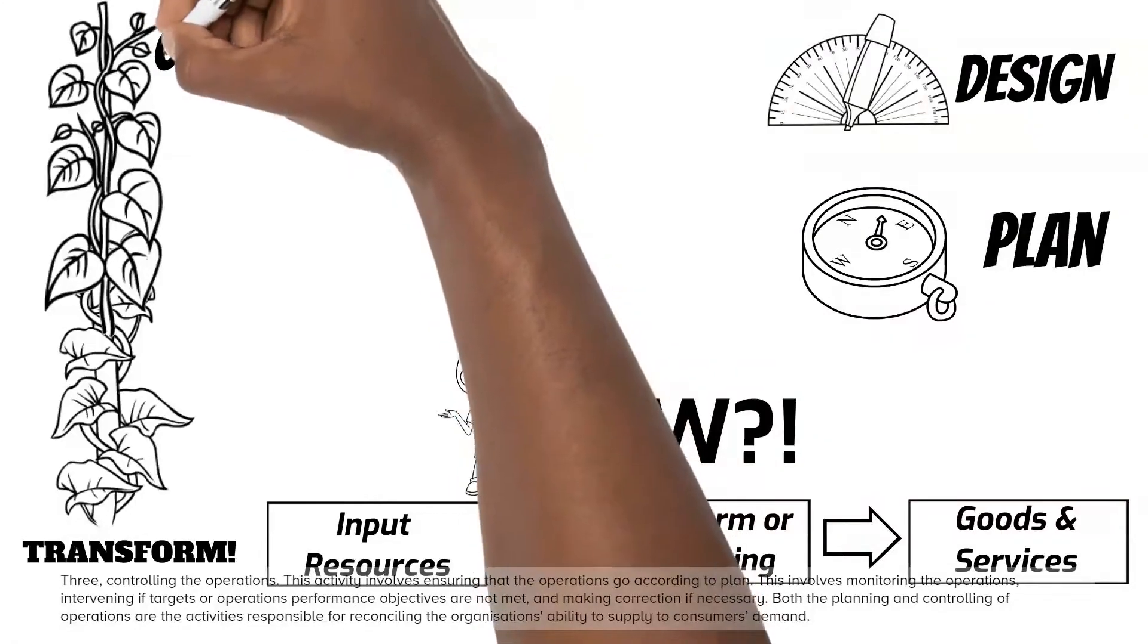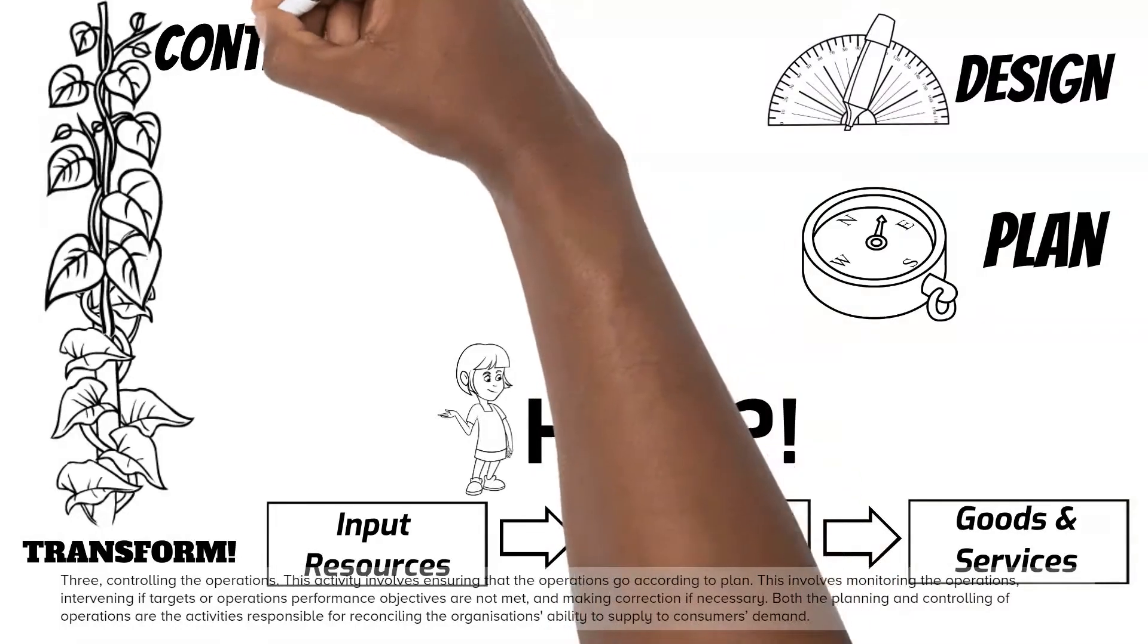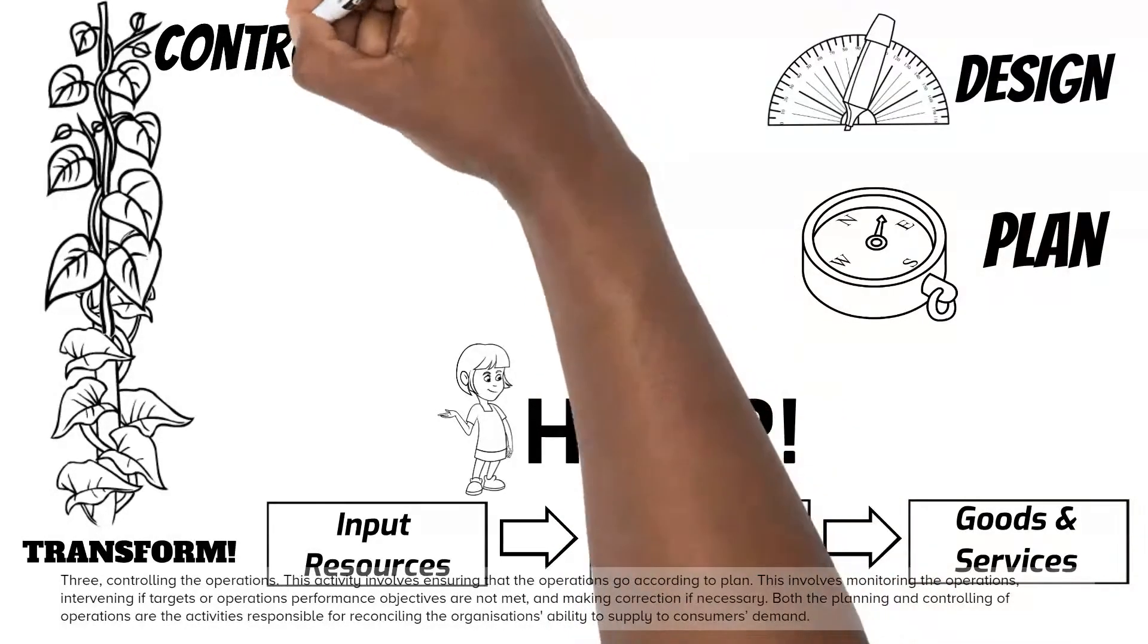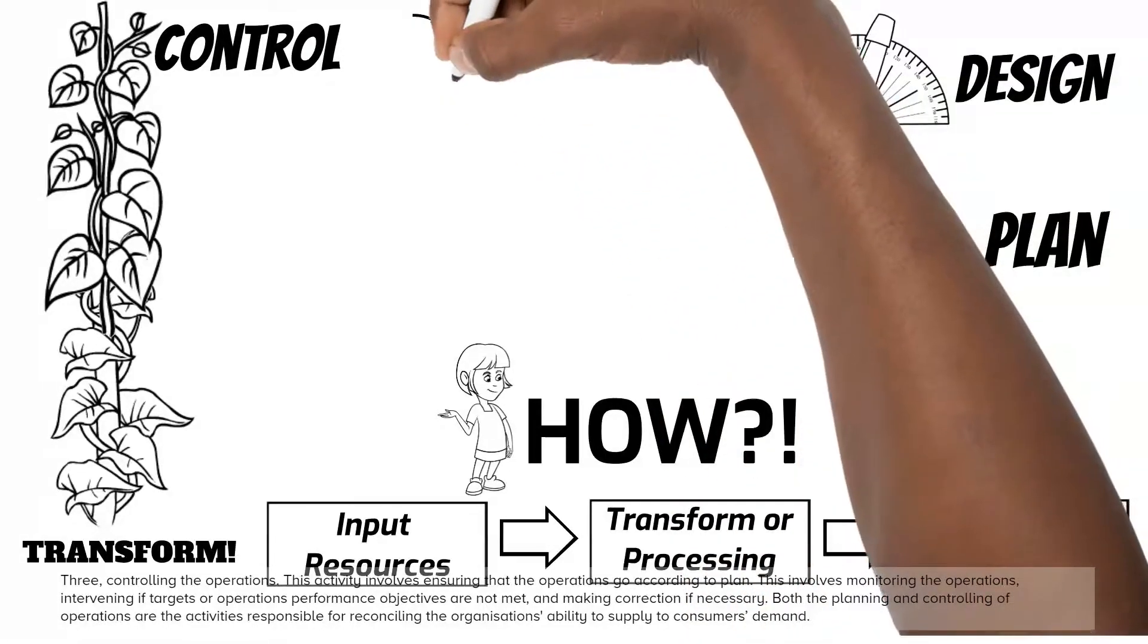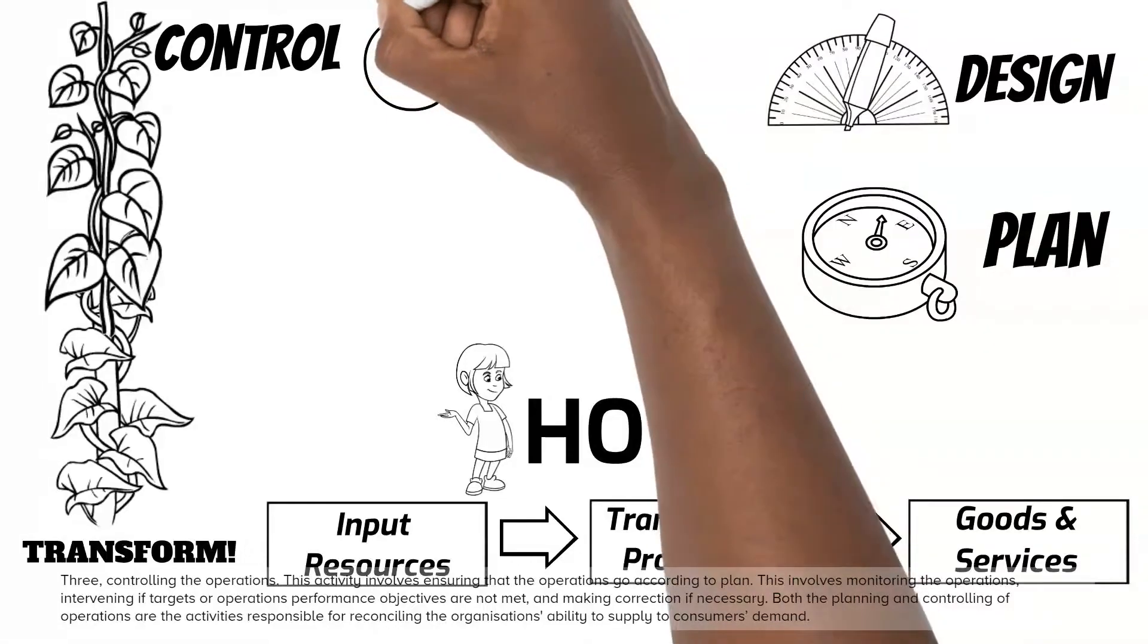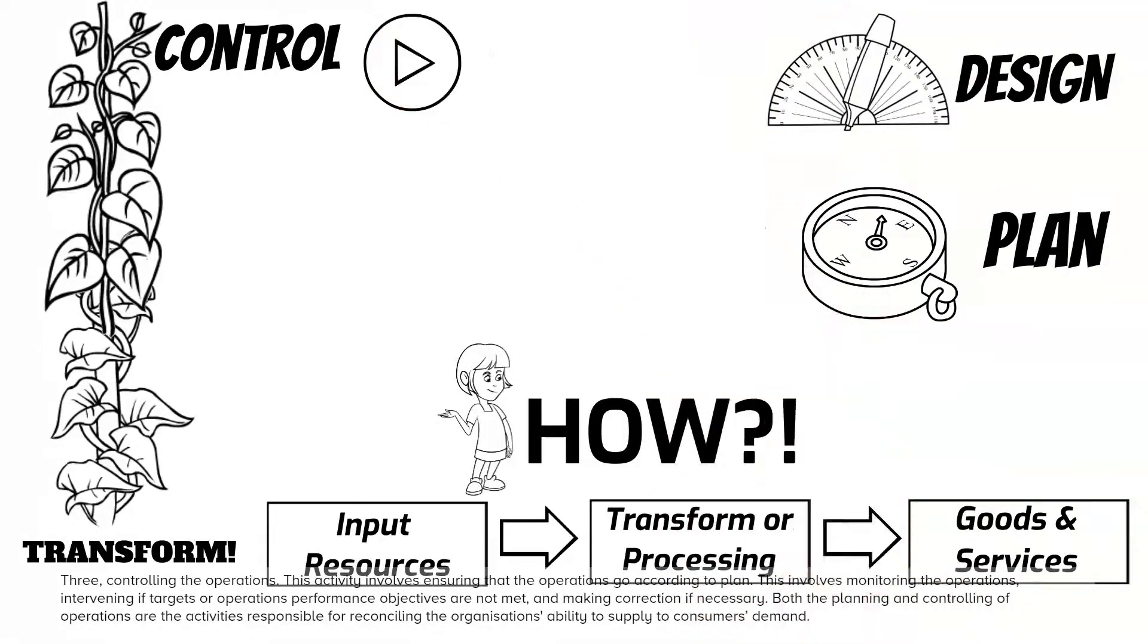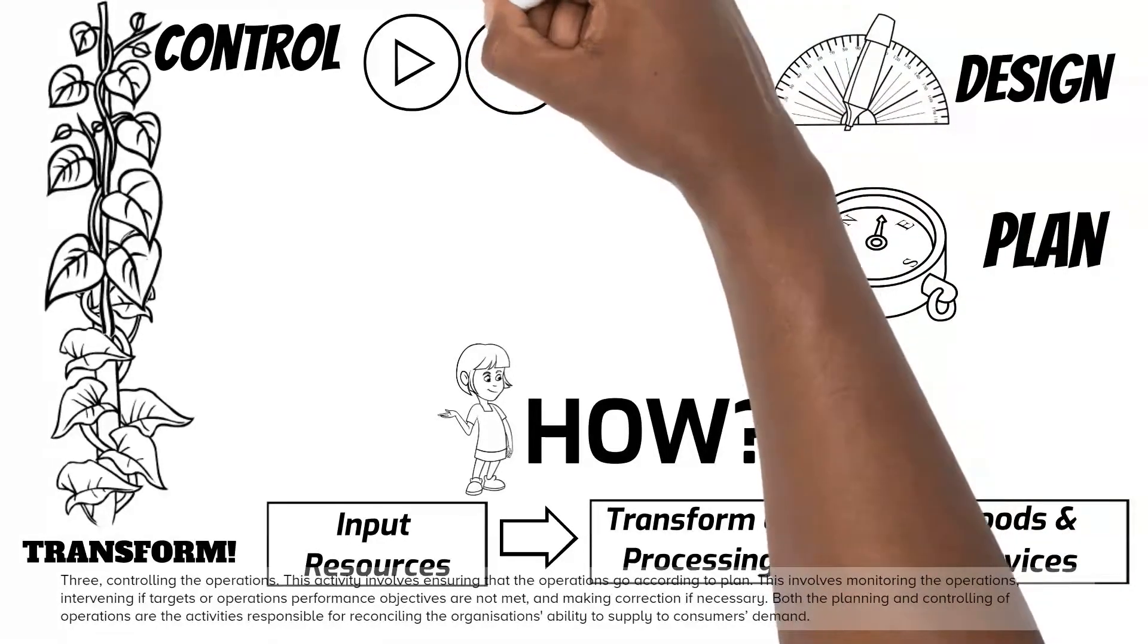Three, controlling the operations. This activity involves ensuring that the operations go according to plan. This involves monitoring the operations, intervening if targets or operations performance objectives are not met, and making correction if necessary. Both the planning and controlling of operations are the activities responsible for reconciling the organization's ability to supply to consumers demand.